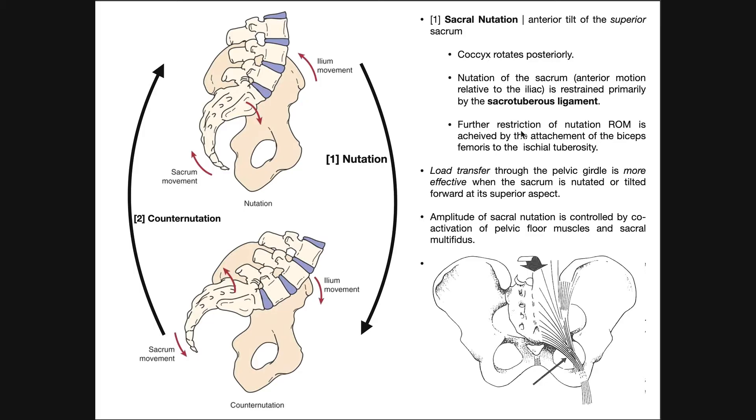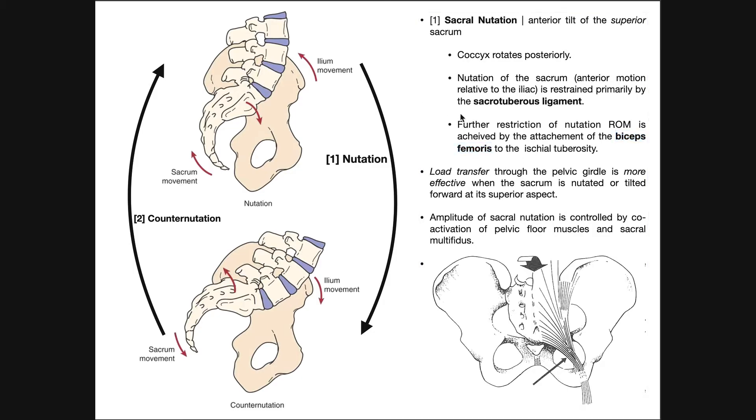We can also further restrict that nutation range of motion, also by the action of biceps femoris, and that's because it originates on the ischial tuberosity. So the biceps femoris, remember, that's one of the hamstring muscles, the lateral one, that can also restrict nutation.